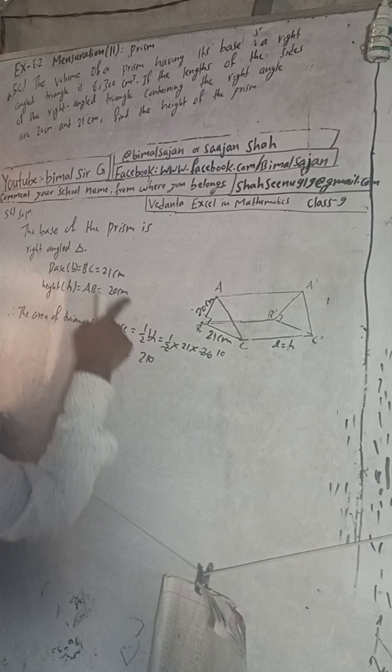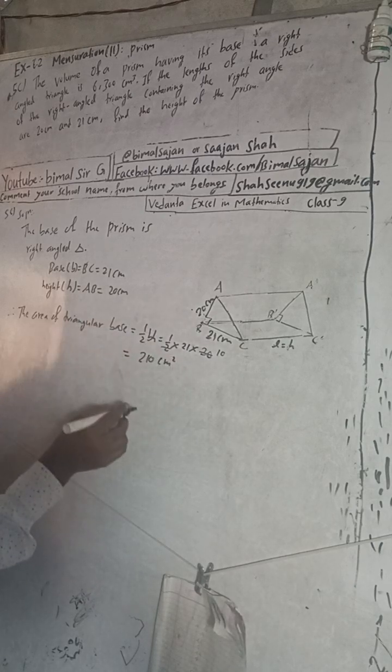This becomes 10. So 21 into 10 will be how much? 210. So this will be cm square. We got area of the triangular base.